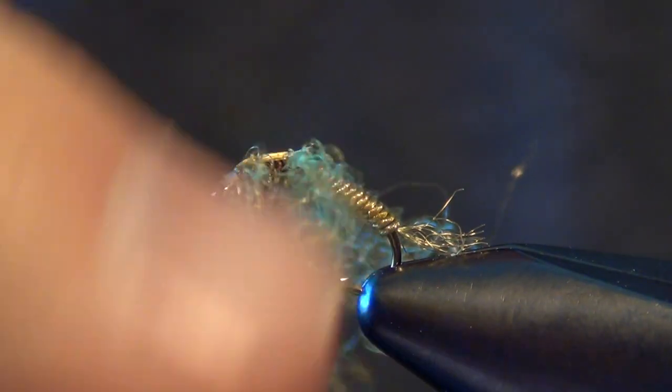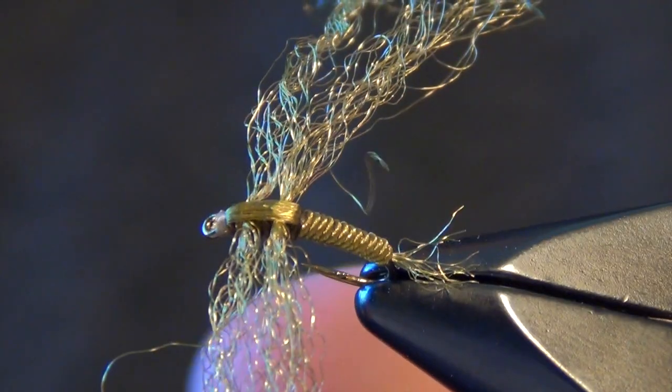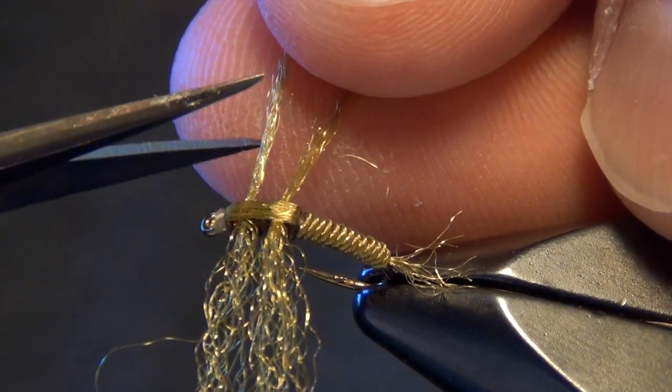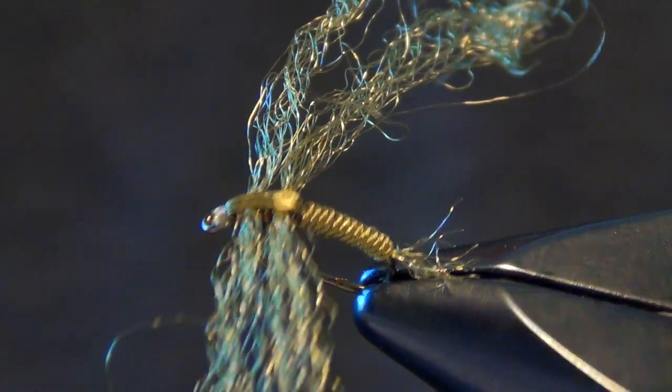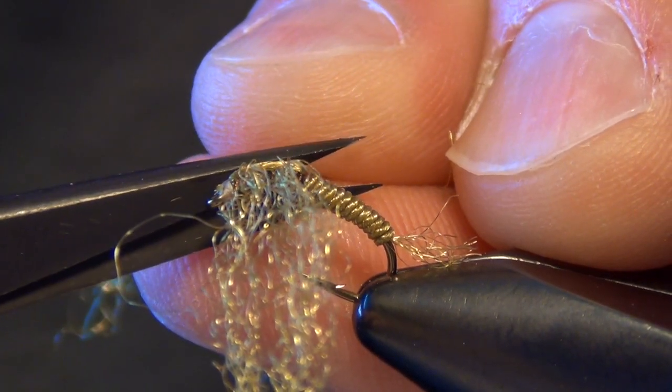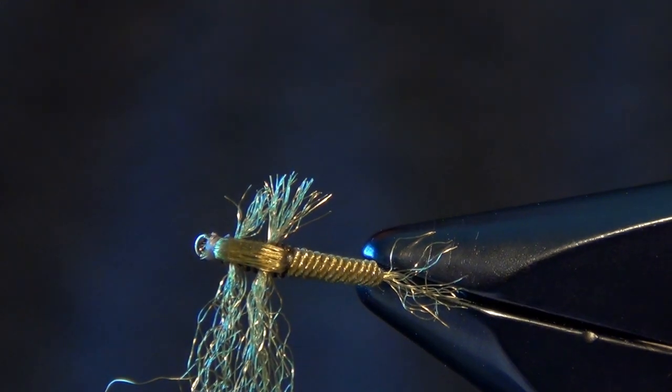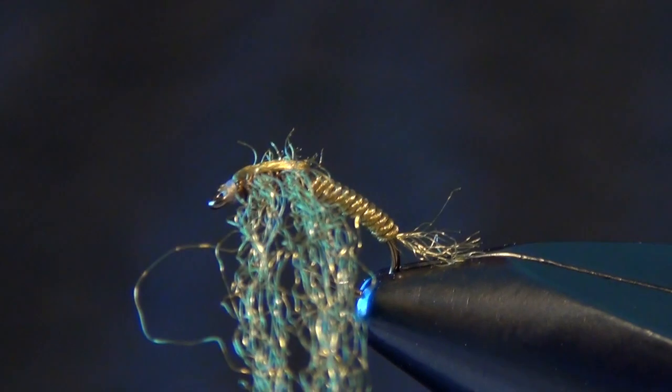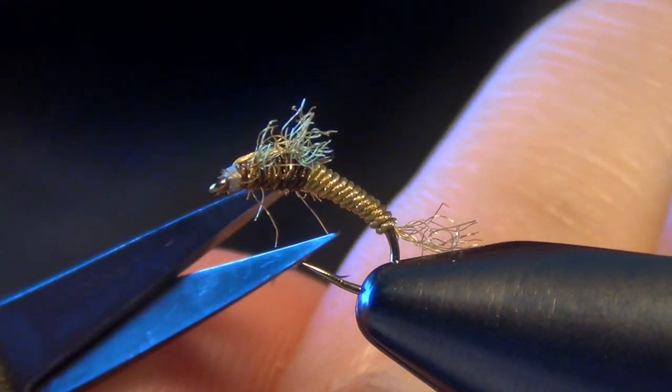Now we're going to trim the legs. I like to trim at a backward angle from the front of the fly. I kind of take my scissors and I start in close on the front legs and then leave the back legs a little bit longer, just like that. See, all the front legs are a little bit shorter, that's the look I'm going for. Then I'll do the same thing over here on the other side. If you get a few longer fibers you can just trim those out of there.